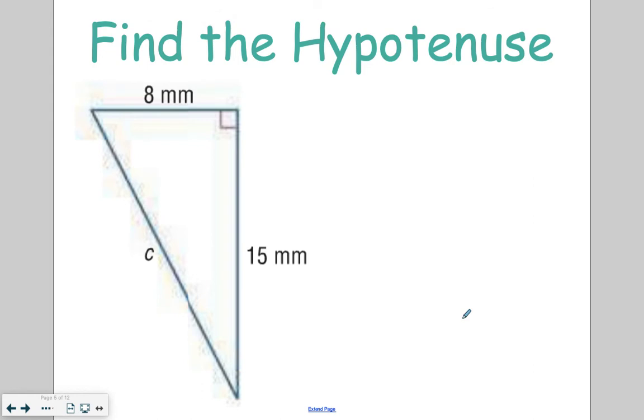We can use this theorem to find measurements on a triangle. So for example, we have measurements for the legs, so I'm just going to call this one A and this one B, doesn't matter, you could flip-flop them, and we're missing side C, that hypotenuse side across from the right angle. So what we can do here is say A squared, so 8 squared, plus B squared, which is 15 squared, is equal to C squared.